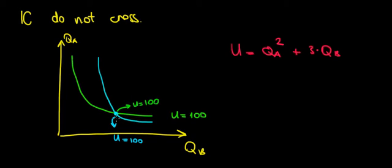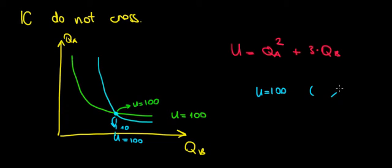Does this make sense? At this certain crossing point, we can see that we have the same quantity of bananas. Let's say the quantity of bananas here is equal to 10 kilos. So utility equals 100 and we have 10 kilos of bananas on the x-axis.